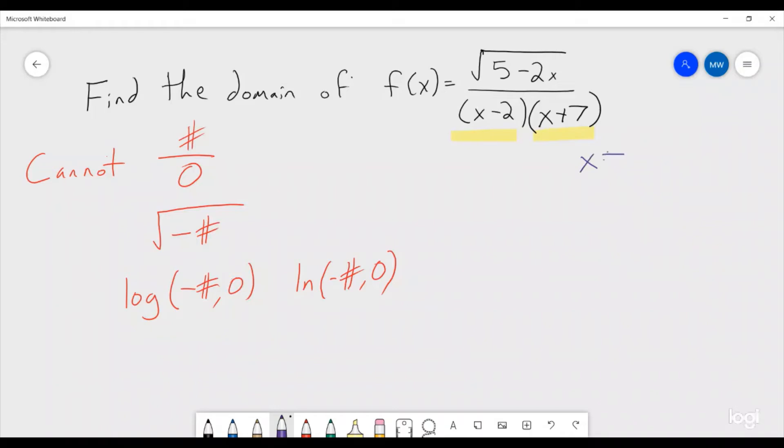That means we know that x cannot be 2, because that's going to make the x minus 2 be 0, and we also know that x cannot be negative 7. Those are the two things that we cannot have in order to allow us to still have division.